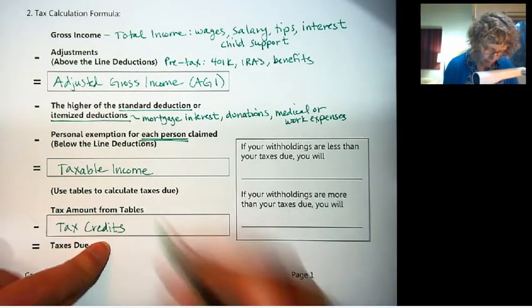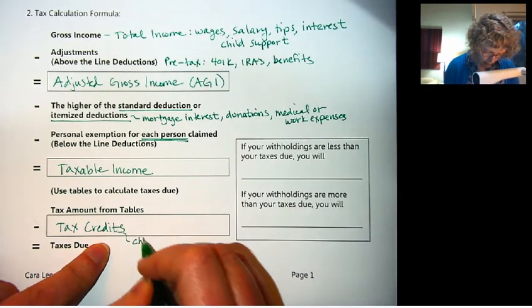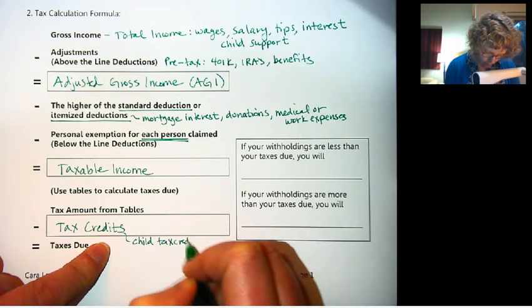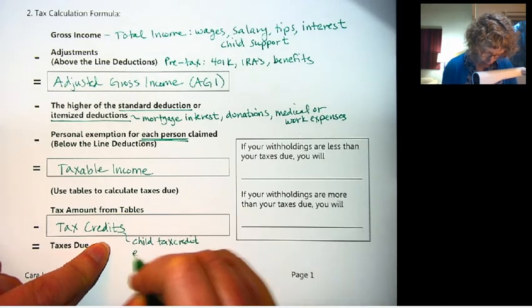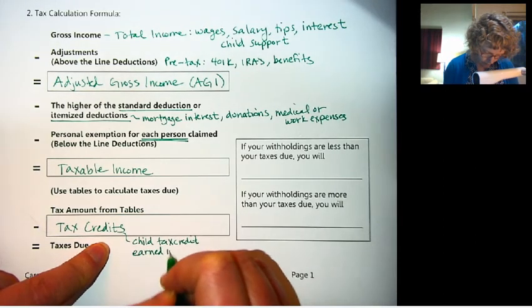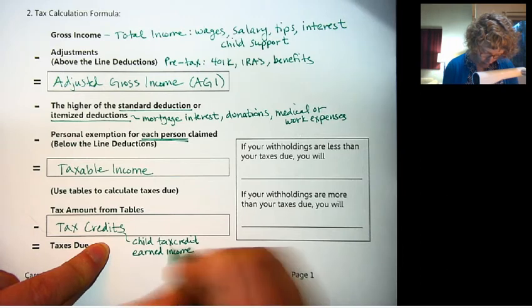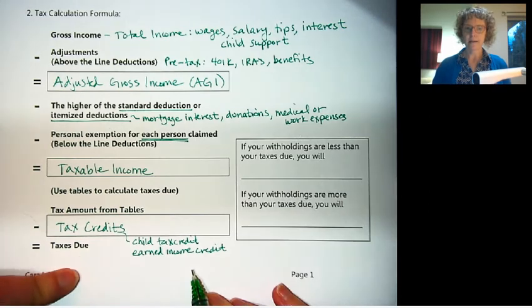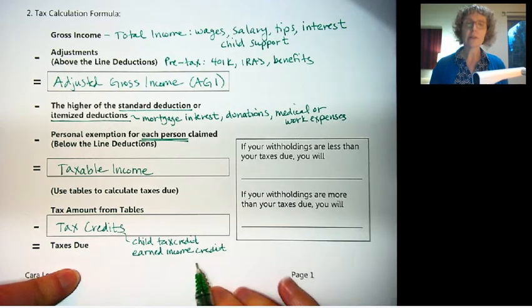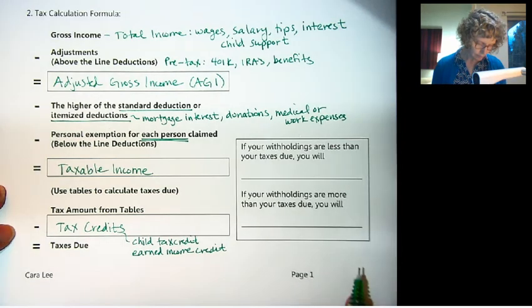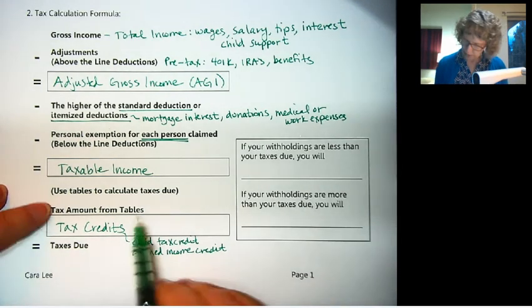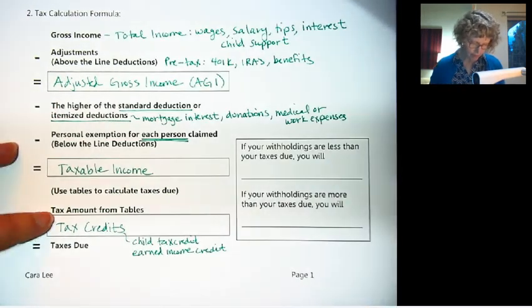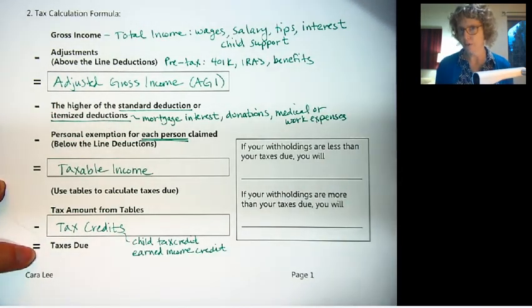So things that you might get a tax credit for, there's a child tax credit if you have children. There's also something called an earned income credit. Sometimes people actually get money back for having a credit. So a tax credit is a very good thing to have. So you take the amount when your tax is calculated, you subtract any credits, and that's the amount of taxes that are due to the government.